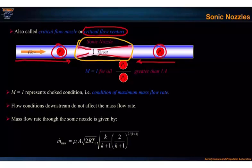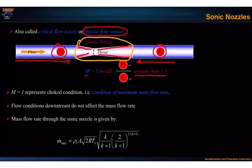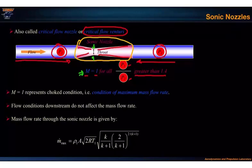If p1 is the pressure upstream of the venturi and p2 is the pressure downstream, we need to remember that if the pressure ratio p1 over p2 is greater than 1.4, then we have the M equal to one condition at the throat — the location of minimum cross-section. This M equal to one condition is called the sonic condition or the choked condition.